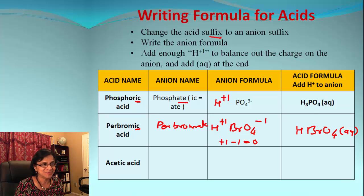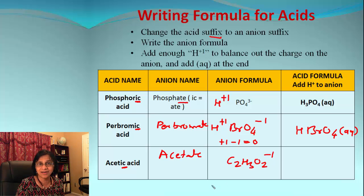So there you go. Acetic acid, ending with -ic again, so I ate something icky. That means our anion is acetate. And what's acetate? It is C2H3O2 -1.